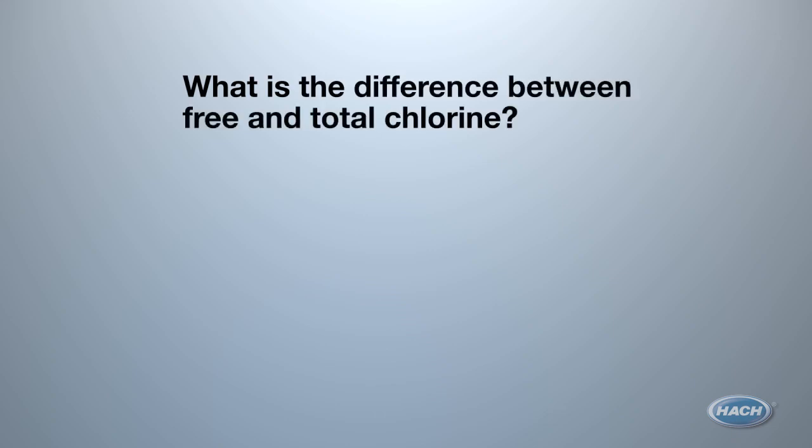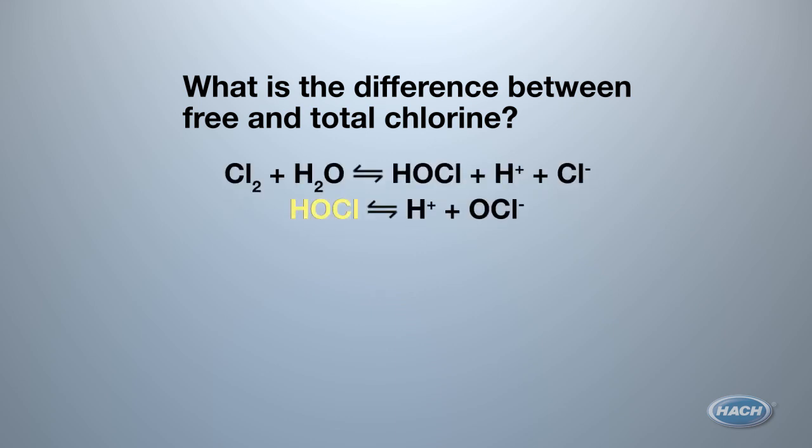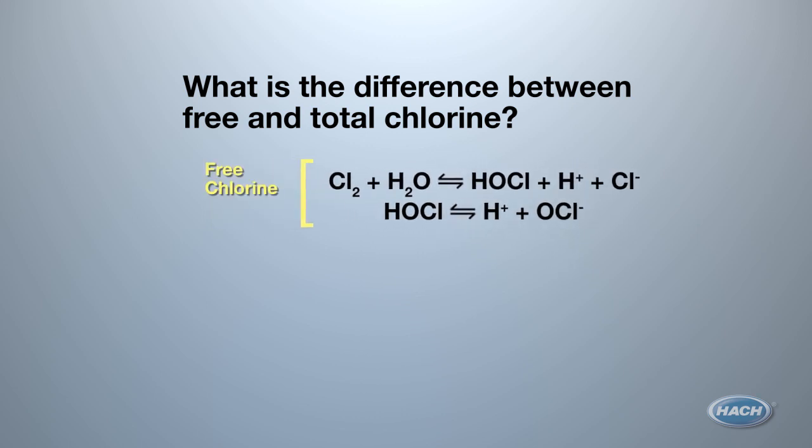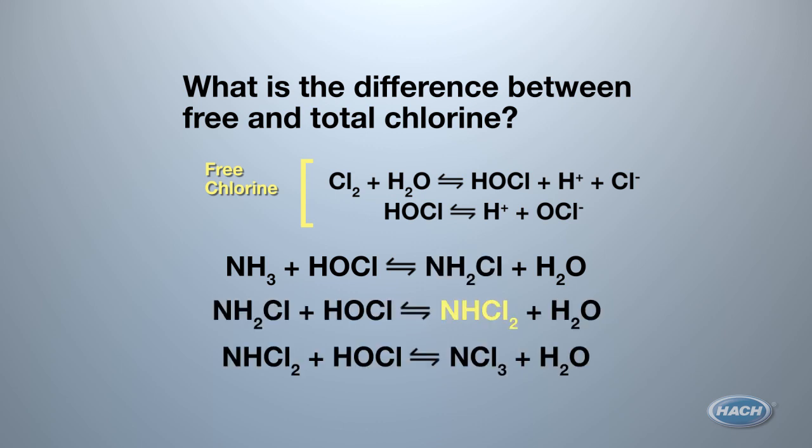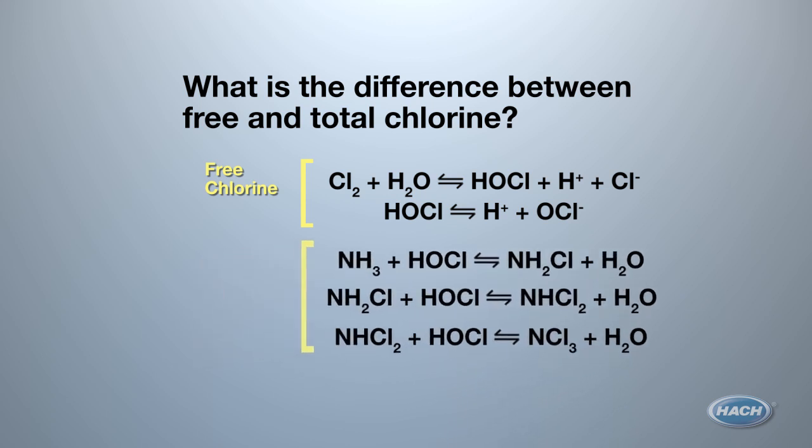Let's take a moment to make an important differentiation. What is the difference between free and total chlorine? Free chlorine refers to both hypochlorous acid and the hypochlorite ion, or bleach, and is the form of chemical commonly added to water systems for disinfection. When ammonia is also present, monochloramine, dichloramine, and trichloramine will form, as we saw. Chloramines are also known as combined chlorine. Total chlorine is the sum of free chlorine and combined chlorine. The level of total chlorine will always be higher than or equal to the level of free chlorine.